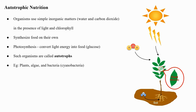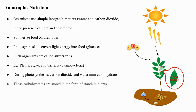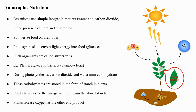Plants, algae, and cyanobacteria are some examples where autotrophic nutrition is observed. During photosynthesis, carbon dioxide and water get converted into carbohydrates. These carbohydrates are stored in the form of starch in plants, and plants later derive the energy required from the stored starch. Plants release oxygen as the other end product.